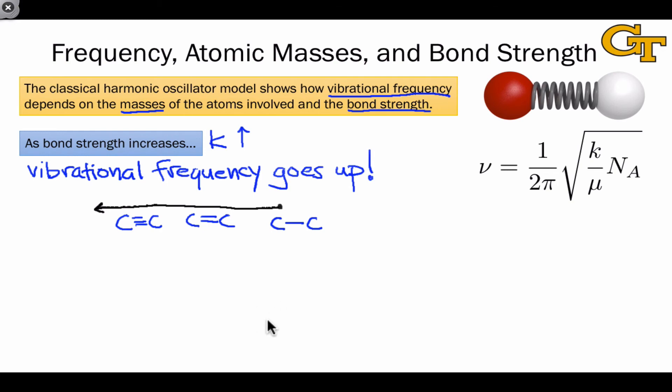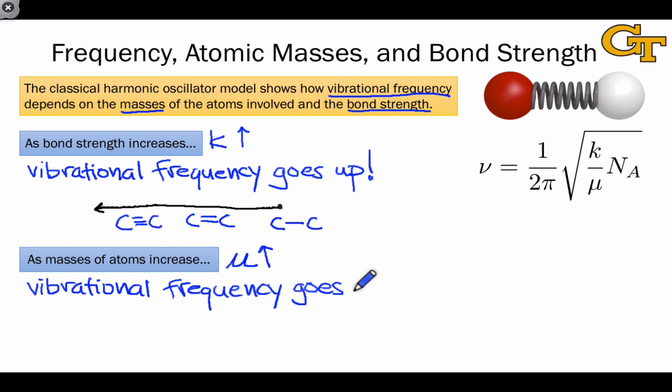One piece of evidence for this is that C-C single bonds vibrate at a higher frequency than any carbon-carbon bonds. The masses of the atoms are modeled in the frequency equation by the reduced mass mu. And so as the masses of the atoms increase, mu increases as well. But since mu appears in the denominator of the right-hand side of this equation, as the masses of the atoms increase, vibrational frequency goes down.